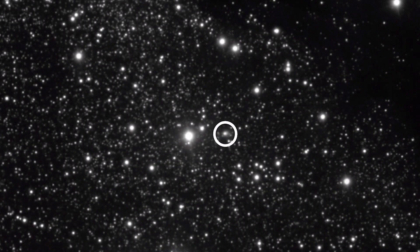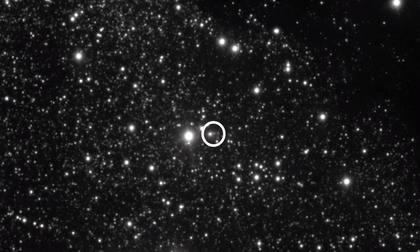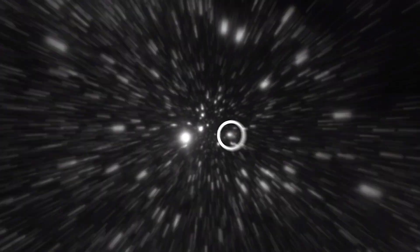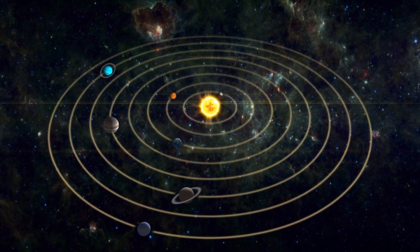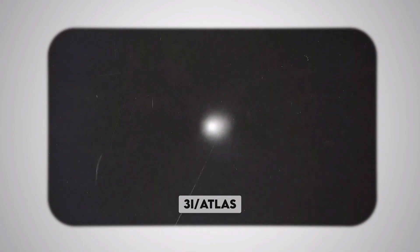Back in October of 2025, we managed to do something for the very first time. We observed an object from another star system, but we did it from the orbit of another planet. It was a huge moment, but when those first pictures of comet 3I/ATLAS came back from Mars, they showed us a real puzzle.